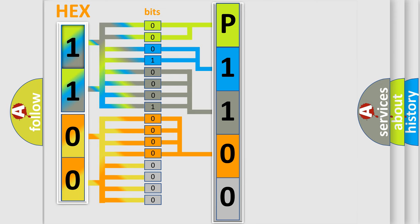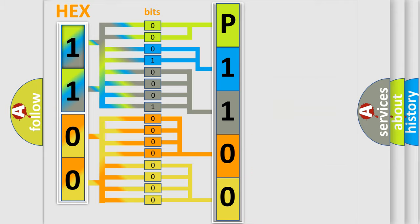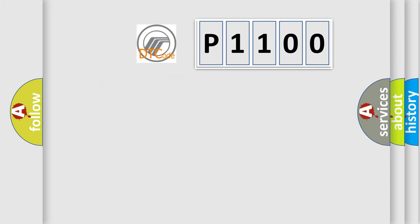A single byte conceals 256 possible combinations. We now know in what way the diagnostic tool translates the received information into a more comprehensible format. The number itself does not make sense to us if we cannot assign information about what it actually expresses. So, what does the diagnostic trouble code P1100 interpret specifically for Mercury car manufacturers?